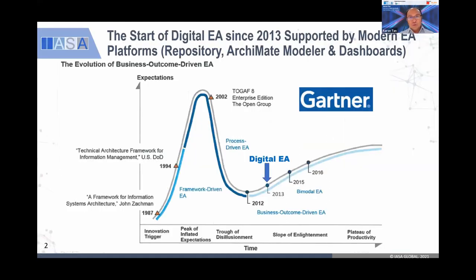Let me rewind about nine years ago, back in 2013. If you see the graph here — this graph was not prepared by me, but actually prepared by Gartner, because Gartner analyzed the whole industry. Gartner is one of the analysts that believes EA is critical to drive a successful digital transformation. Gartner plotted this chart, and you can see that in 2012, about 10 years ago, EA hit rock bottom.